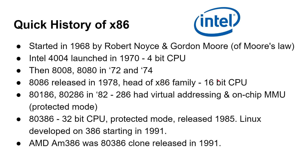That was followed by the 80186 and the 80286 in 1982. The 286 had virtual addressing, which means it could do MMU and virtual memory. Then when the 80386 came out, that was a 32-bit CPU — so we've now jumped to 32-bit. It maintained protected mode and the MMU. And then the 386 became popular in IBM AT compatibles.